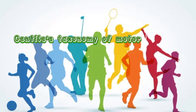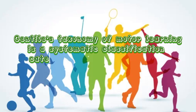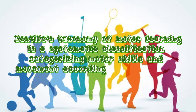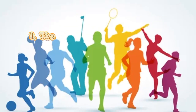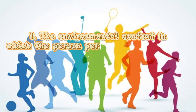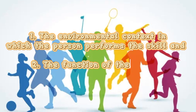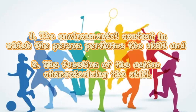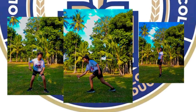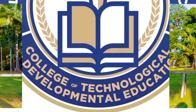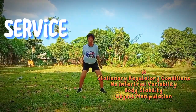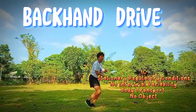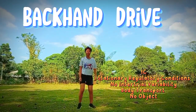Gentile's taxonomy of motor learning is a systematic classification categorizing motor skills and movement according to two general dimensions of actions: the environmental context in which the person performs the skill, and the function of the action characterizing the skill. Today I will perform an example of Gentile's taxonomy of motor skills, which is a figure 8 body bay.